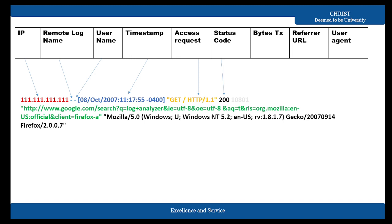The status code indicates whether the request was processed successfully or not. If there is an error in processing, you may encounter errors like 404 or 505, and that error will be stored in the server for that particular request. Then comes bytes transferred — the total number of bytes transferred from the server to the client for that request.